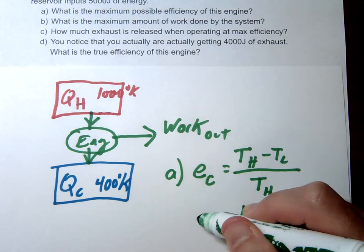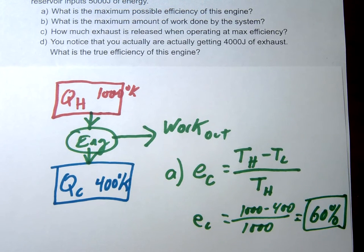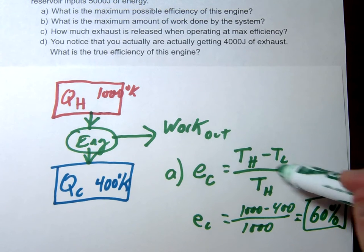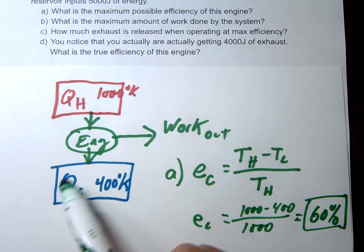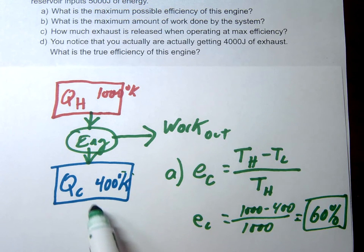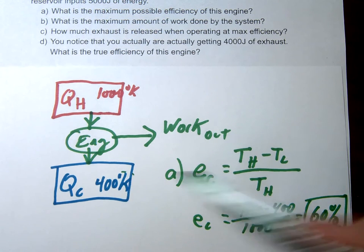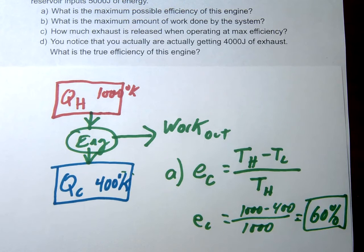So again, what this is telling us is the max possible efficiency that this engine could have. Notice the only way you could get 100% is if your low temperature region was at absolute zero, right? And so we know that's impossible, so you would never be able to get that. All right, let's go ahead and try letter B.